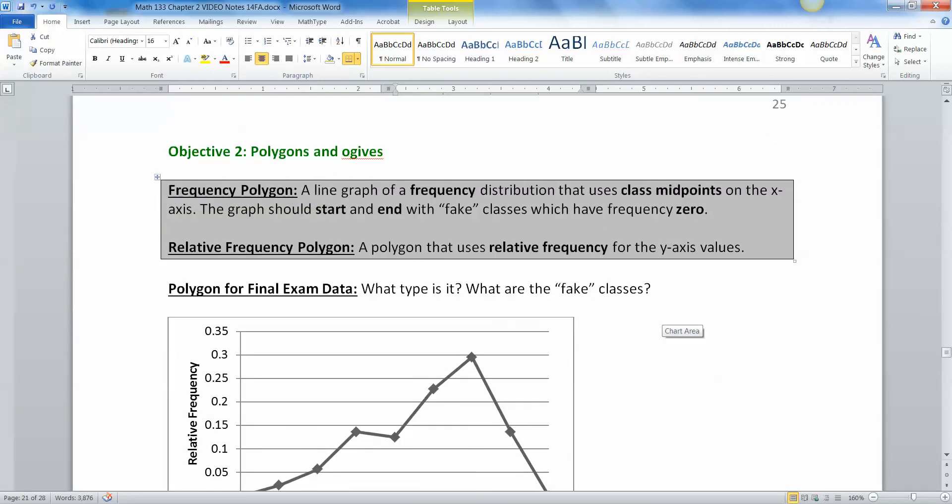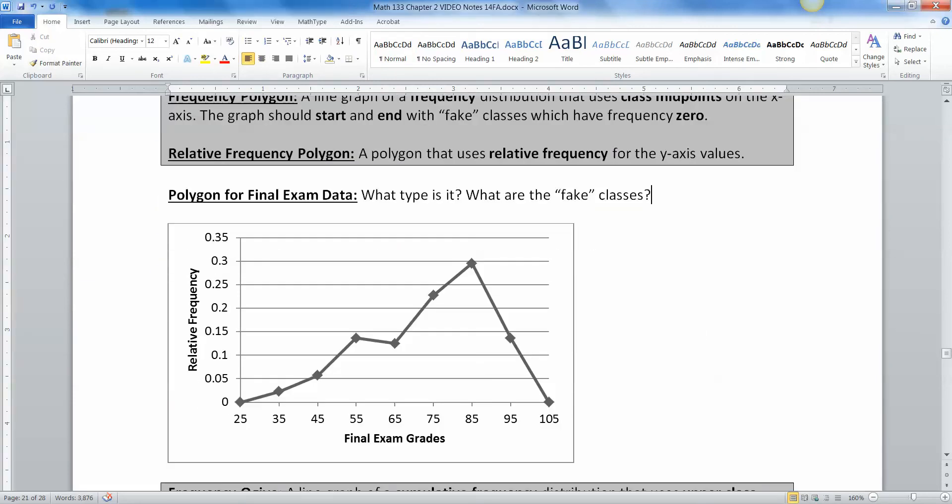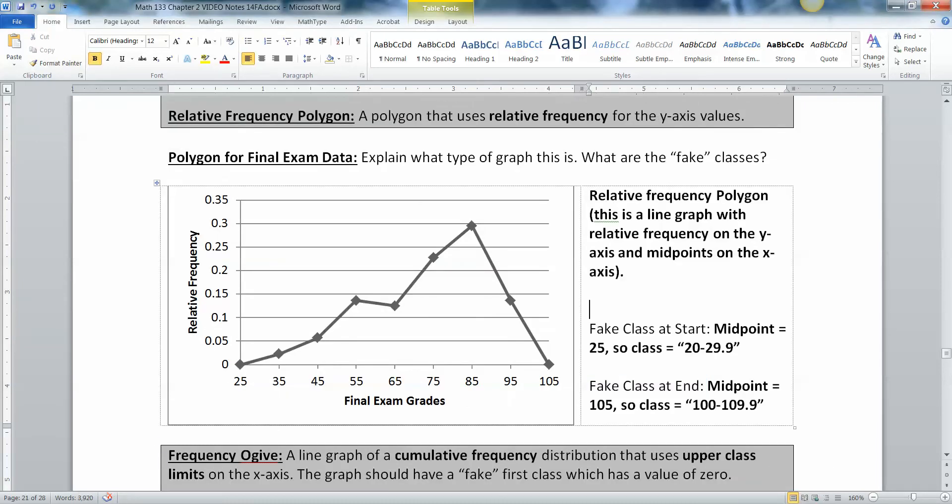All right. So what type of graph is this? Well, this is a relative frequency polygon. So let me type that up one second. There we go. So I changed the question a little bit to explain what type of graph this is. This is a relative frequency polygon. That's because it's a line graph with relative frequency on the y-axis and the midpoints on the x-axis. That's the definition of a relative frequency polygon.